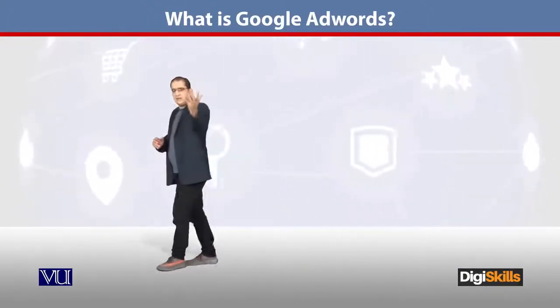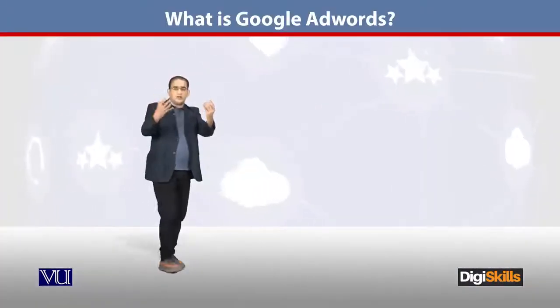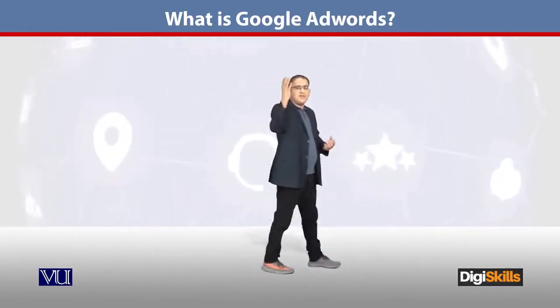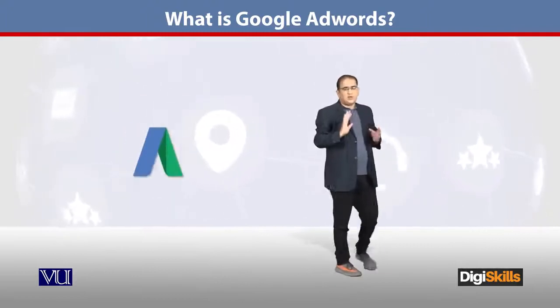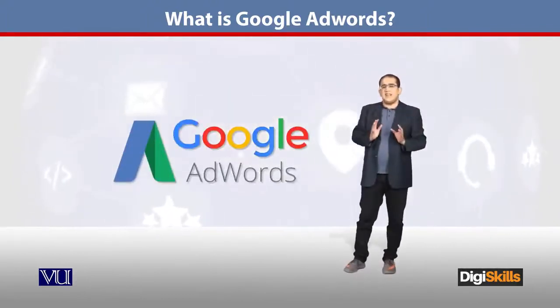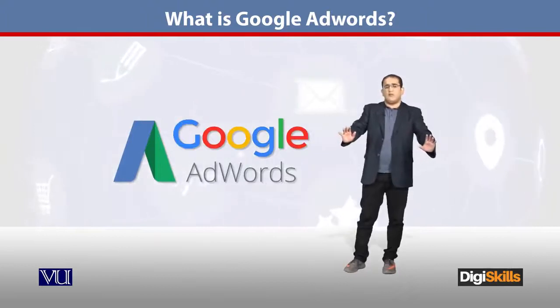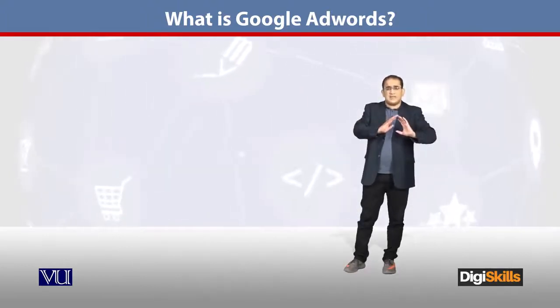As an example: one company has a product and that company places an ad on Google. So when I search as a user, the company's ad appears. This is basically driven by keywords.